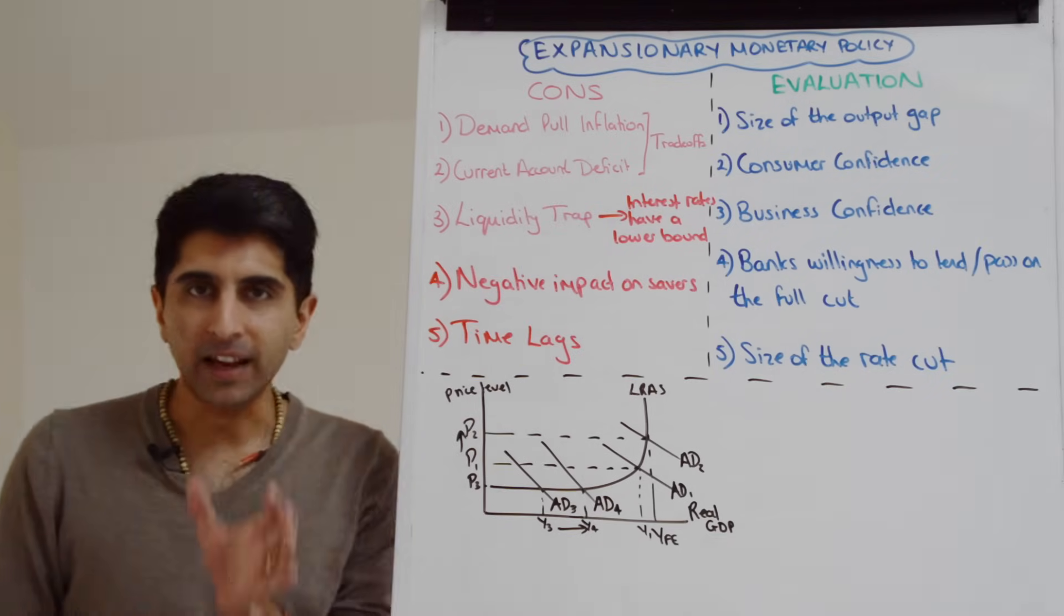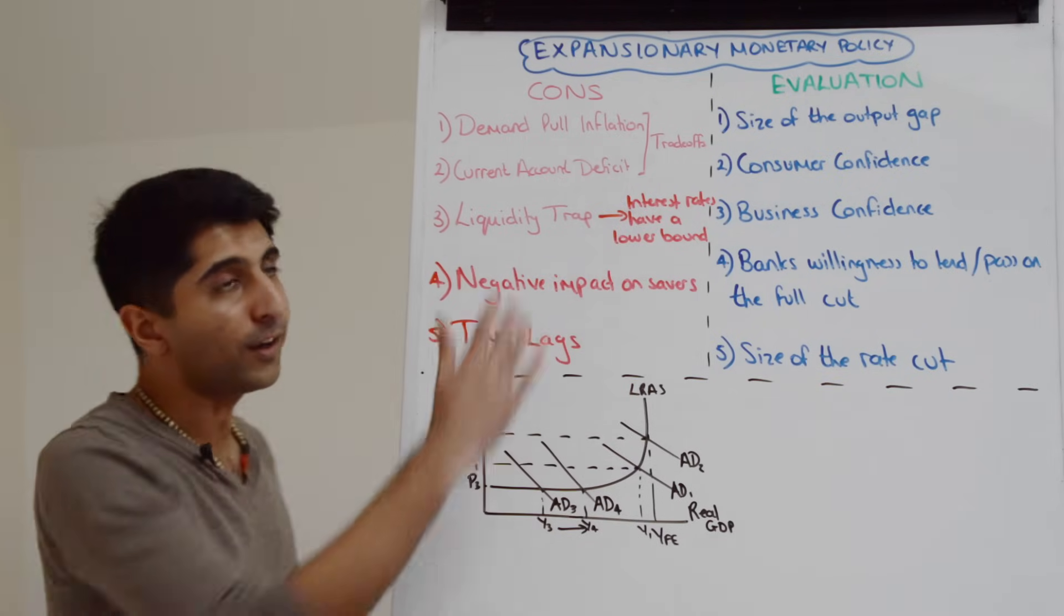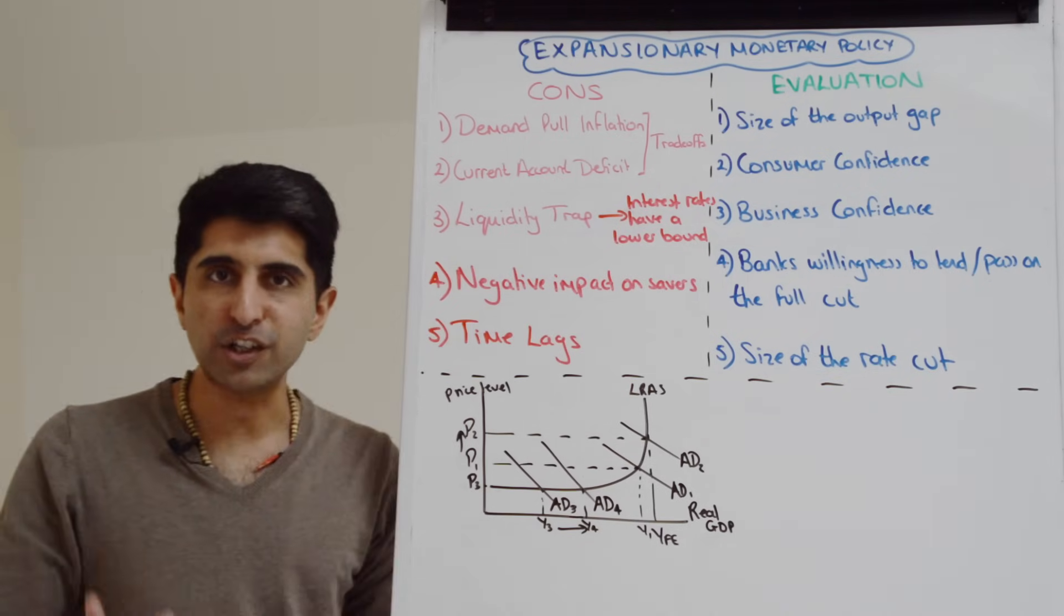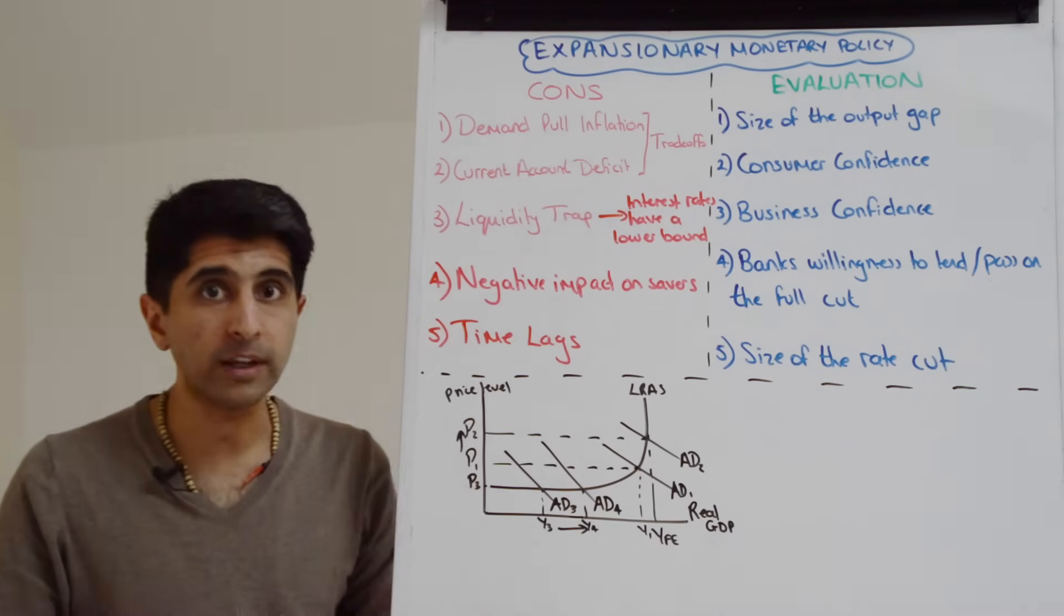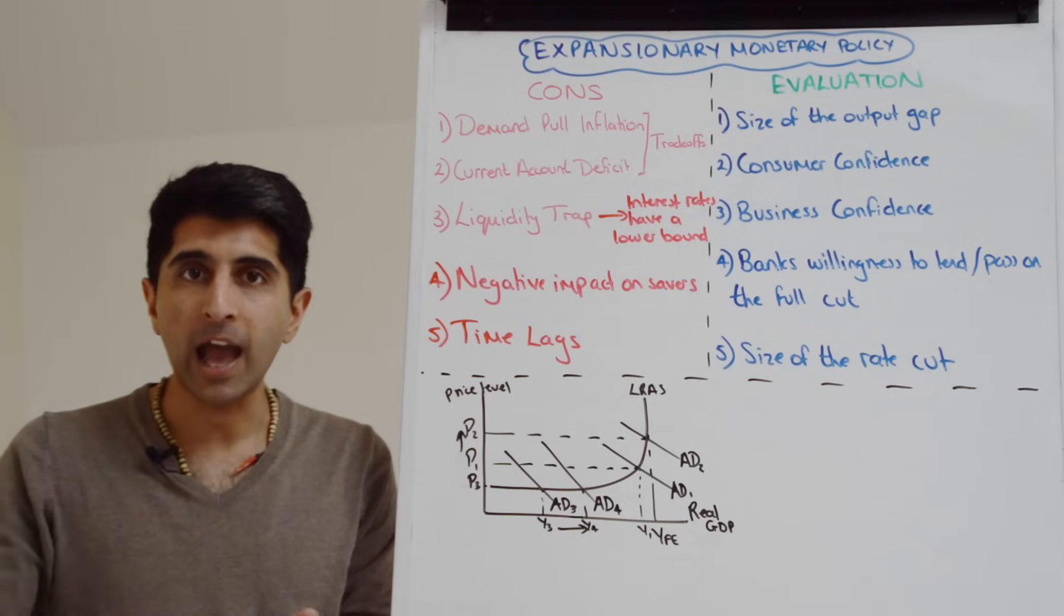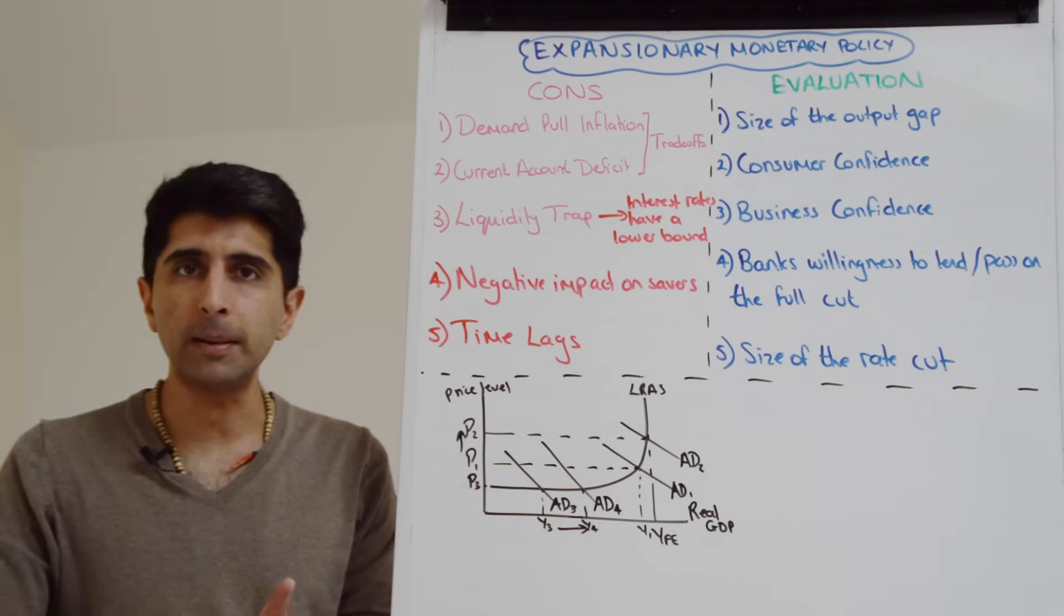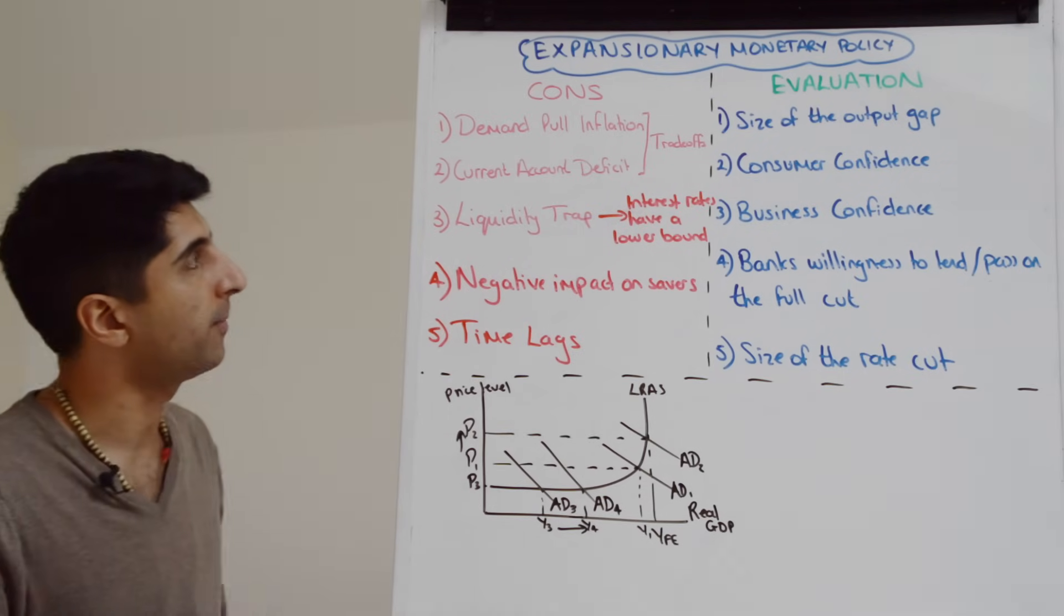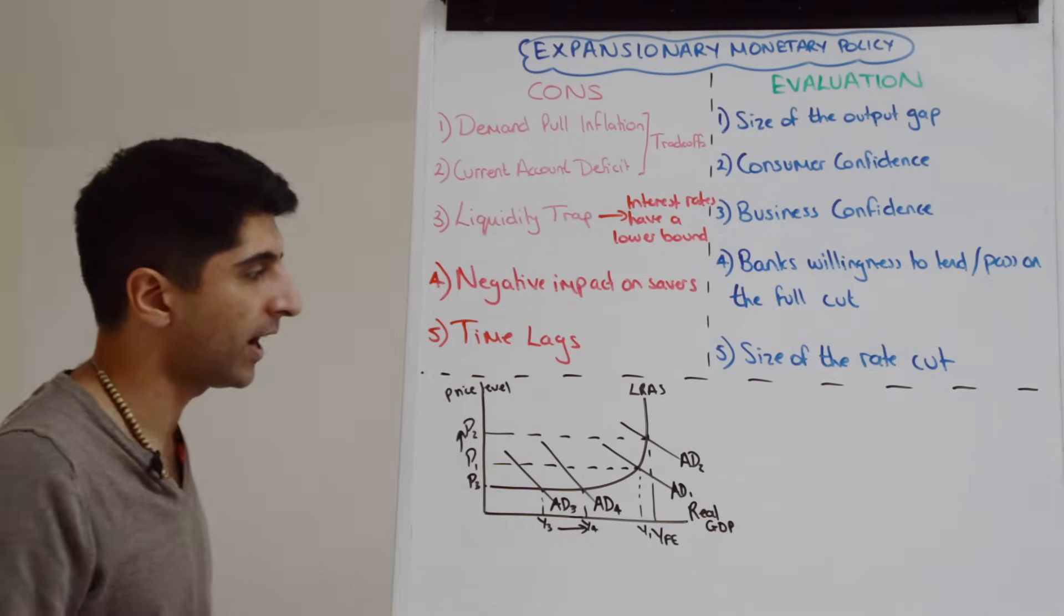Now even though we said that a central bank would be targeting inflation as their primary goal, there is still a risk of demand-pull inflation as a trade-off, as a conflict of macro objectives, if they cut interest rates for the objective of stimulating growth and lowering unemployment. This could well happen if for whatever reason growth and unemployment are more important to the economy, then there is a risk of demand-pull inflation as a side effect with inflation overshooting the target.